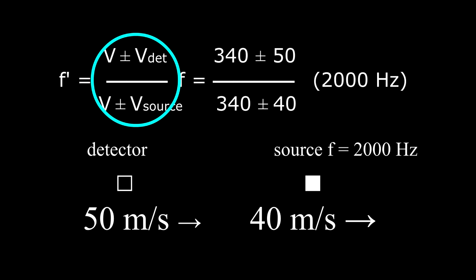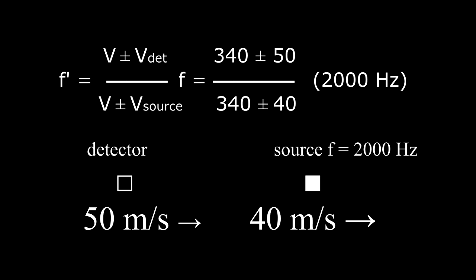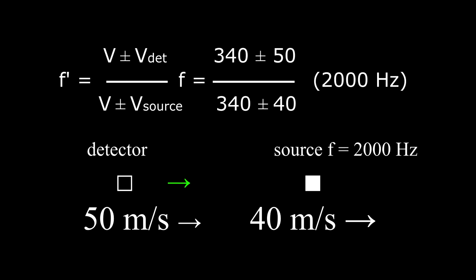In the ratio of velocities the units cancel, but each of the velocities has to be expressed in the same unit of measure — for example, in meters per second. Next we choose either the positive or the negative sign separately in the numerator and the denominator. First look at the numerator, which contains the velocity of the detector. The detector is trying to move toward the source and this will increase f prime, so we make the ratio larger by choosing the plus sign in the numerator.